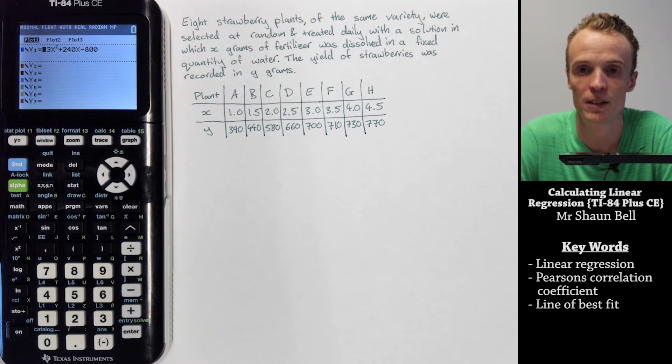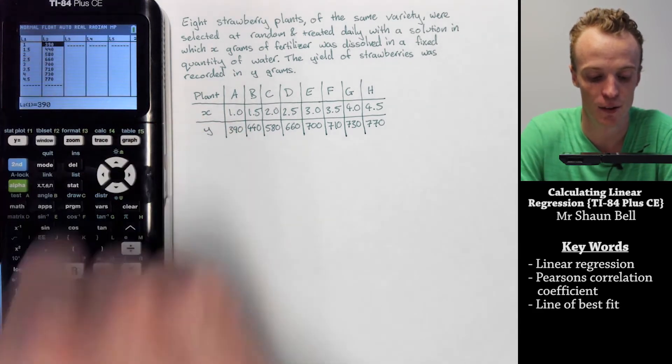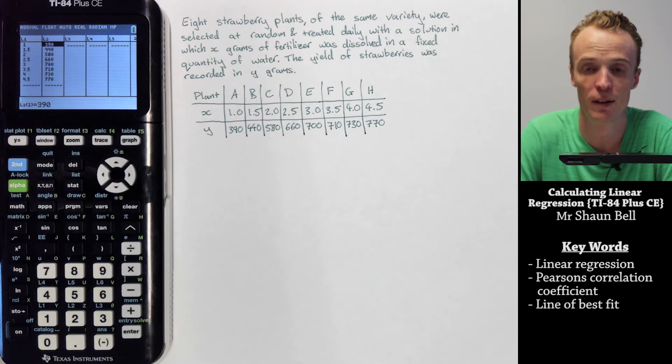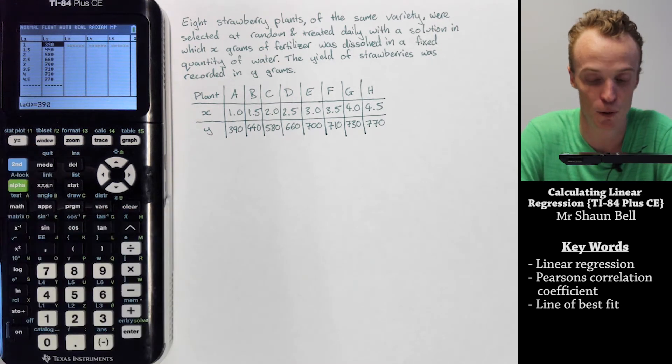Once you've done this, you need to tell the calculator to graph which lists you want to graph. We know that the x is in list 1 and the y's are in list 2. To create this graph, we need to go to the statplot function, which is in blue above the y equals button.